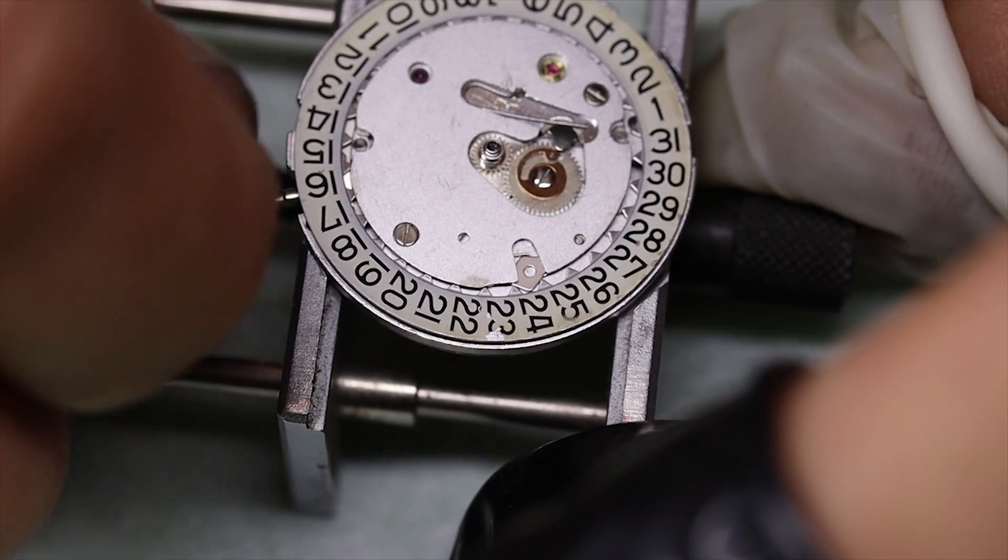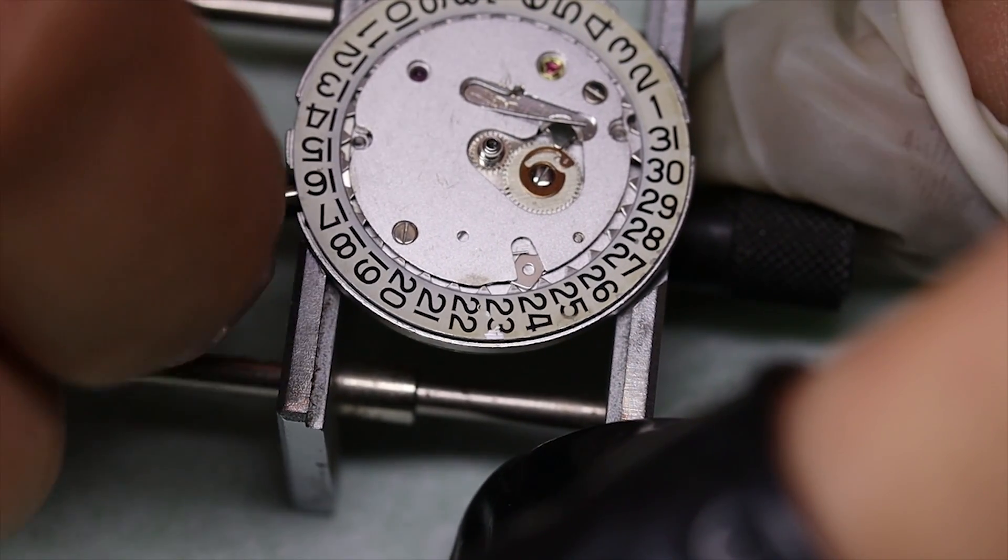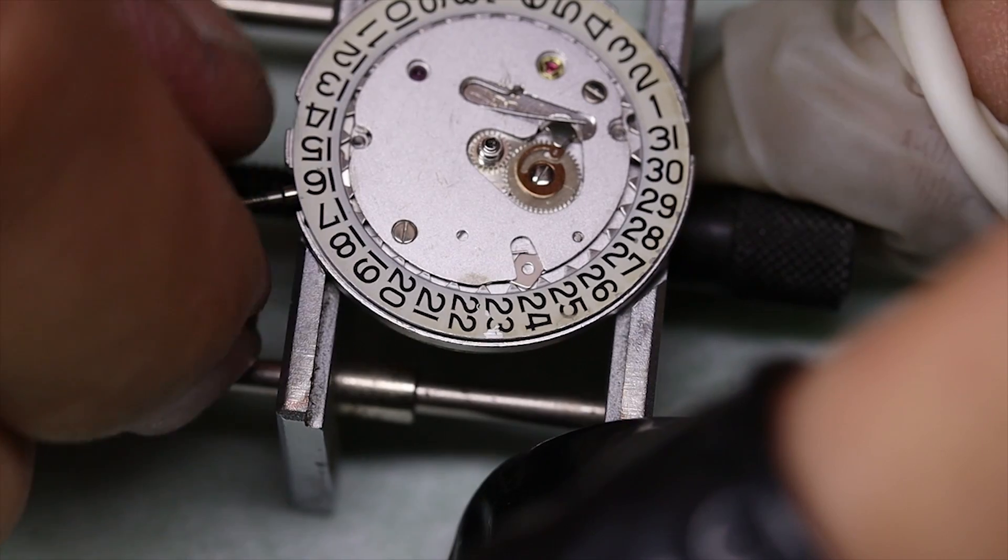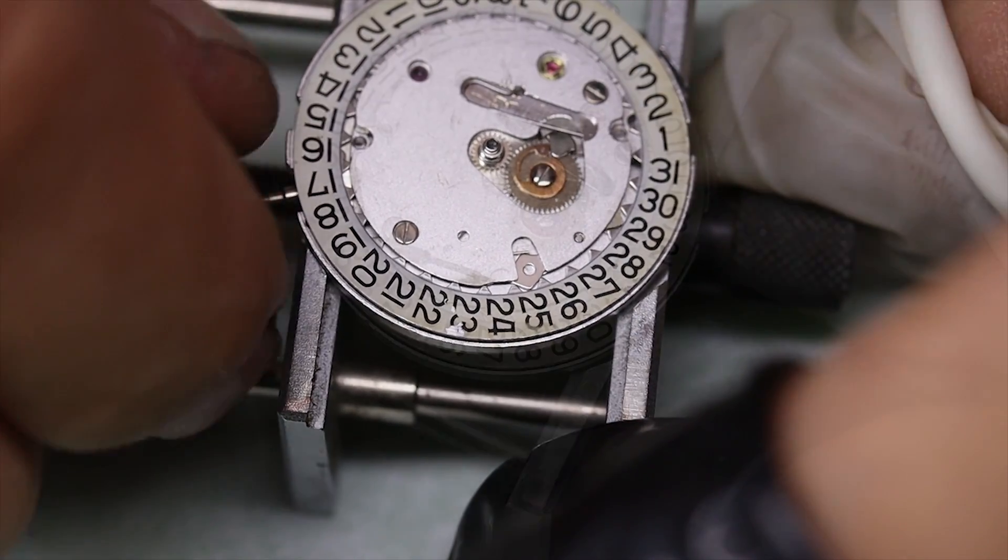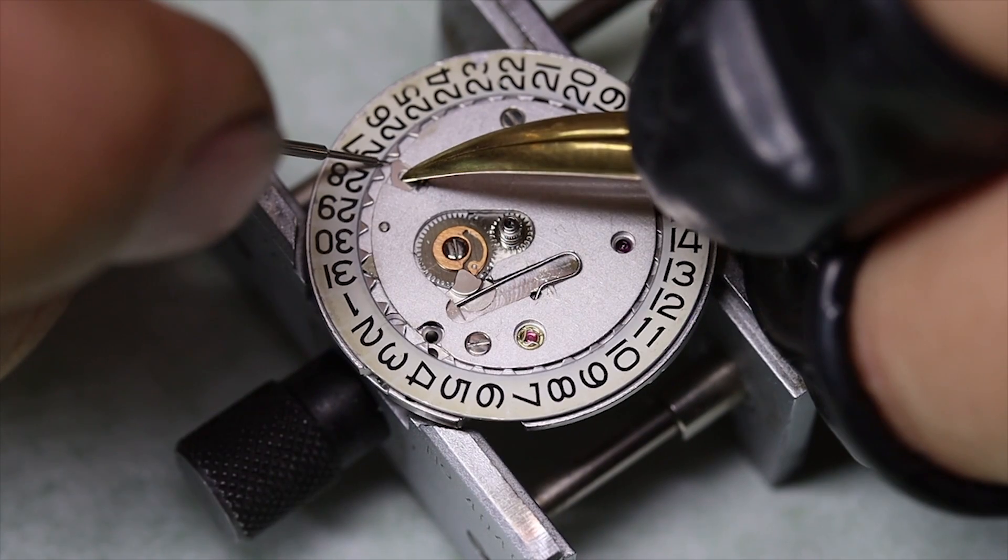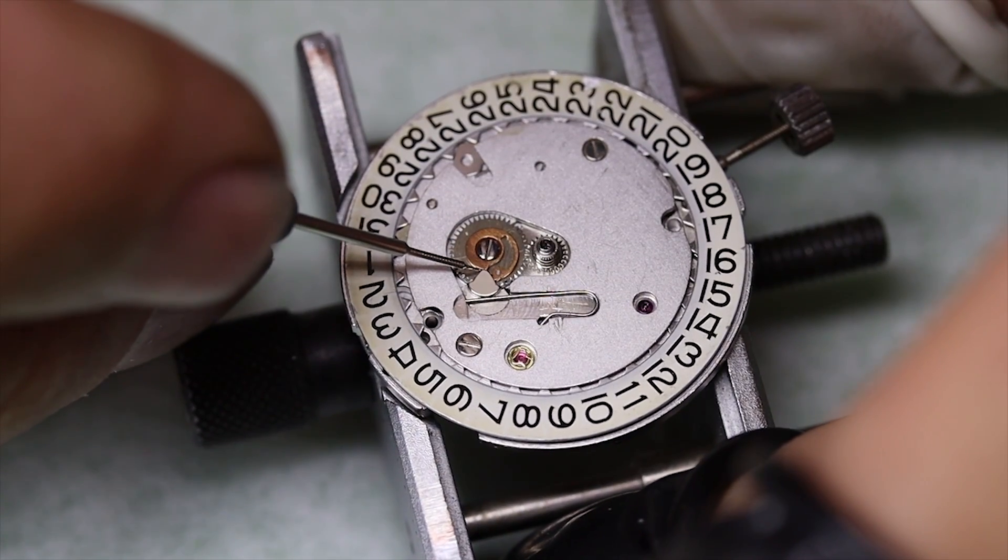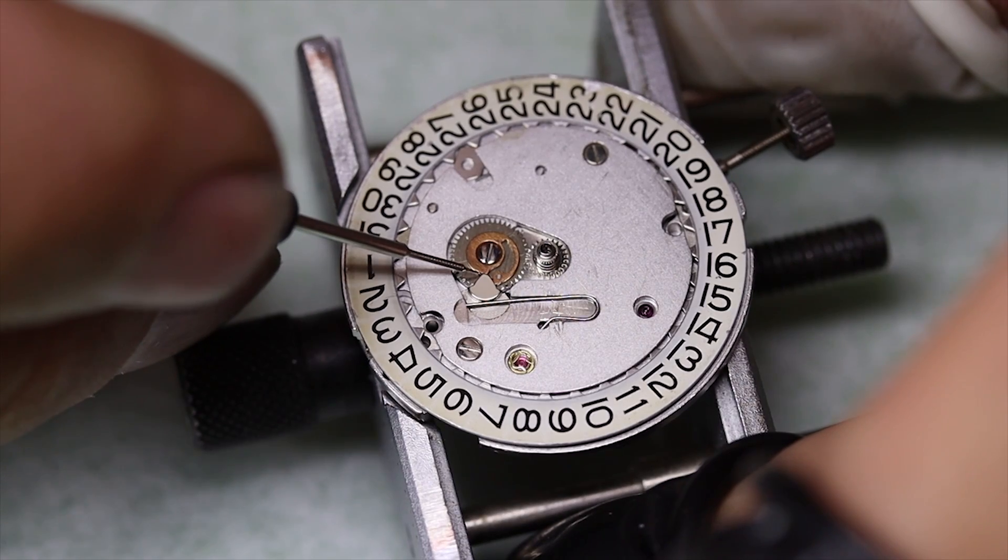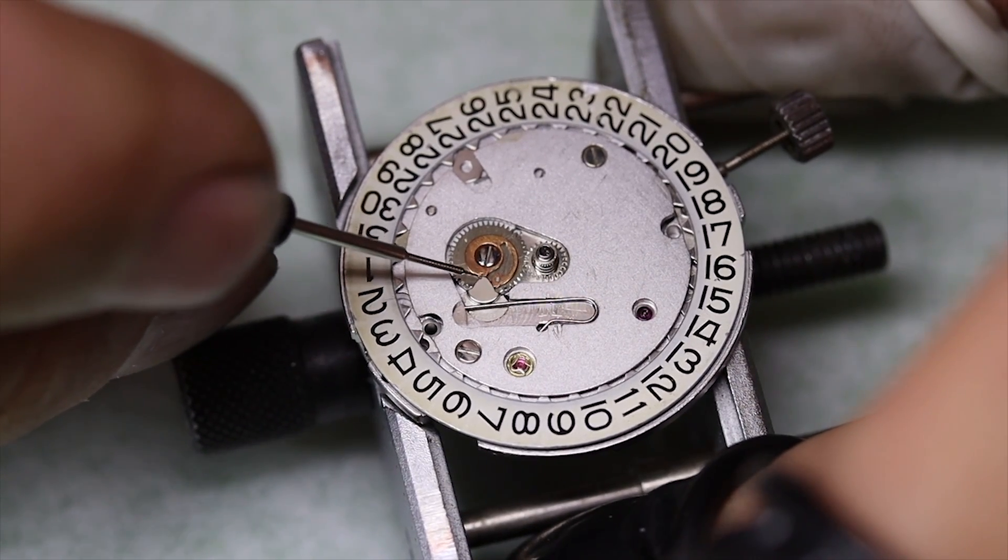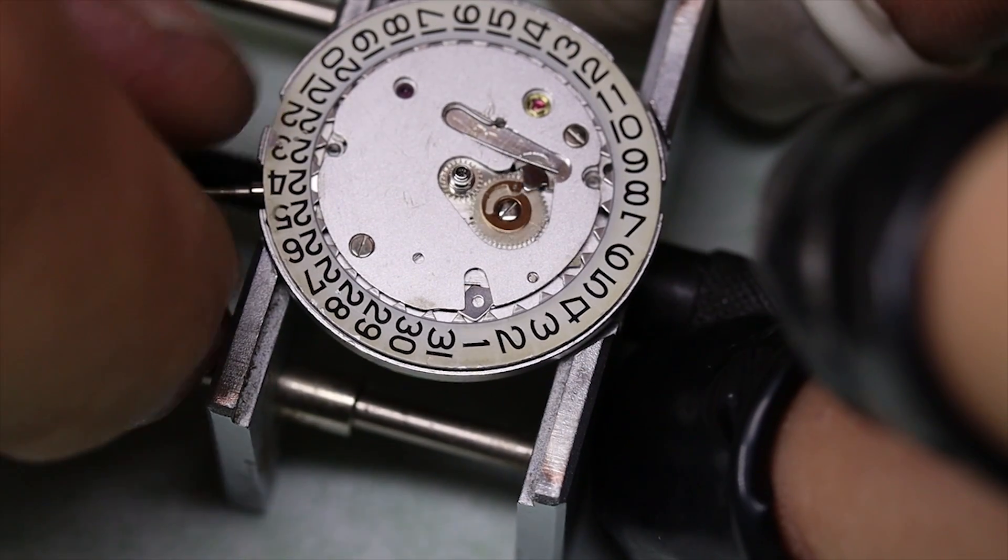We can semi-quick set the date by turning the crown the other way and then back across midnight again. Kaboom again. I'm gonna put a little bit of oil on the jumper and also on the contact points between the different parts of the calendar works. And we're gonna forward it a few times.